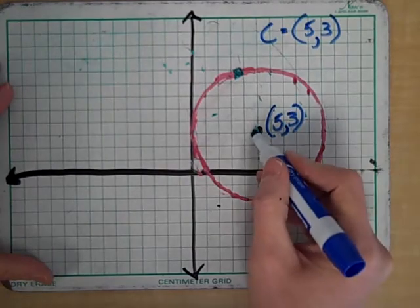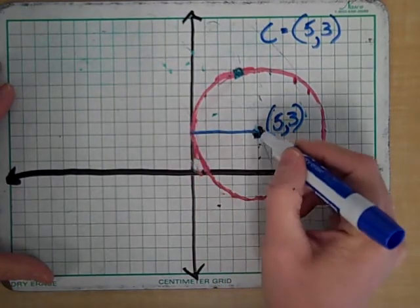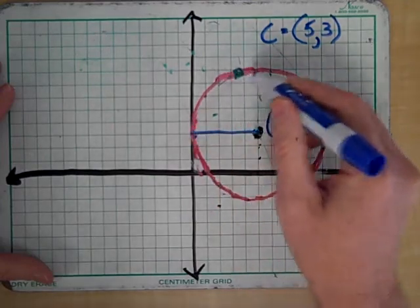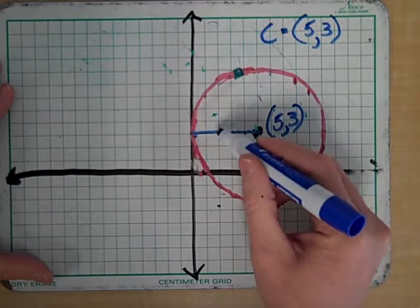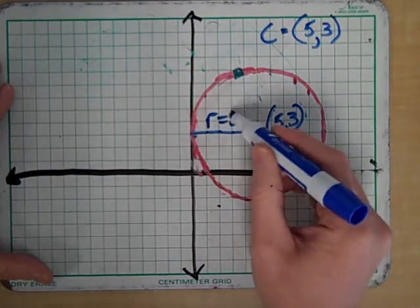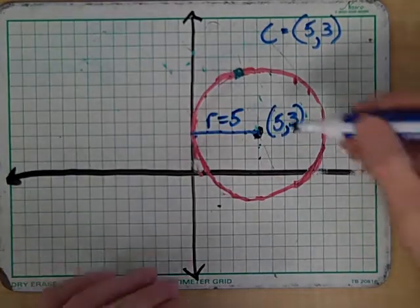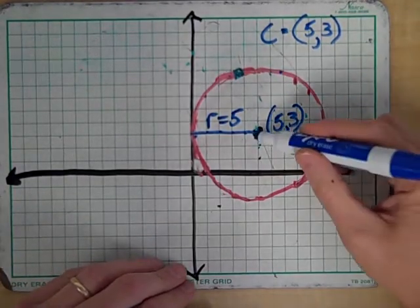The other strong characteristic that a circle has is that constant radius, that constant distance that each point is from the center. In this case, [counting] four is five units. The radius for this circle is five. Now that is true of every single point - is five units away from the center.